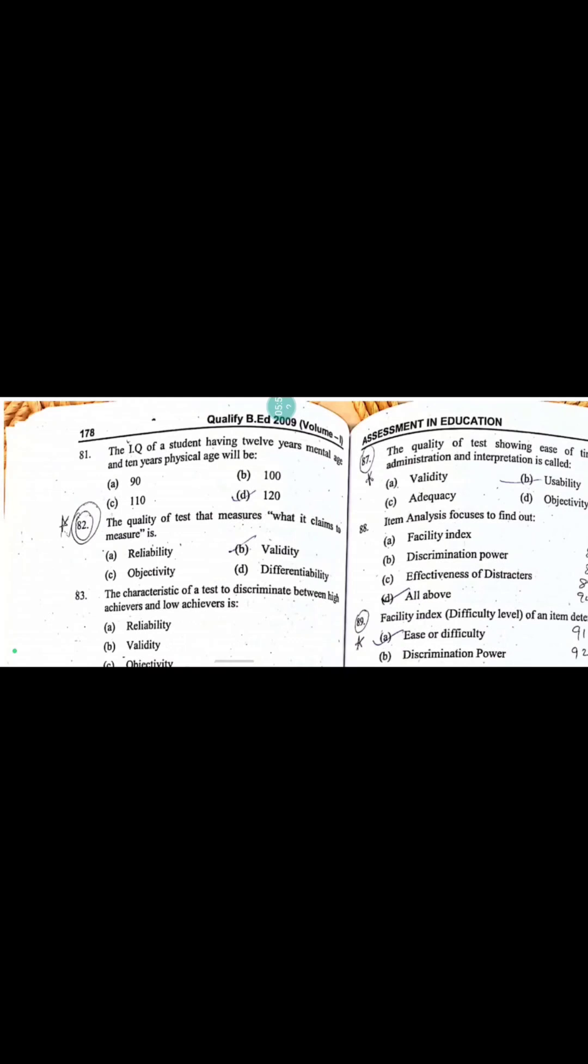The IQ of a student having 12 years mental age and 20 years physical age will be: IQ equals MA divided by CA times 100. So 12 divided by 10 times 100 equals 120.